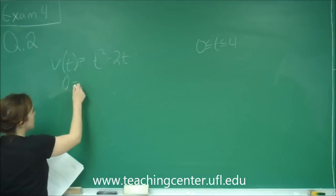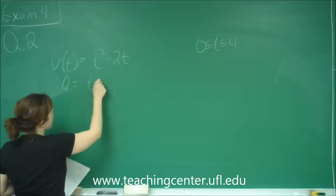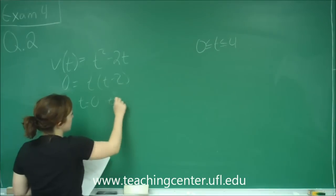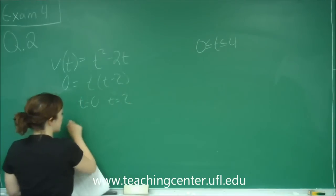So we're going to set this equal to 0 and solve. I'm going to factor out a t and I get t minus 2. So I get t equals 0 and t equals 2. I'm going to set that up on a number line.